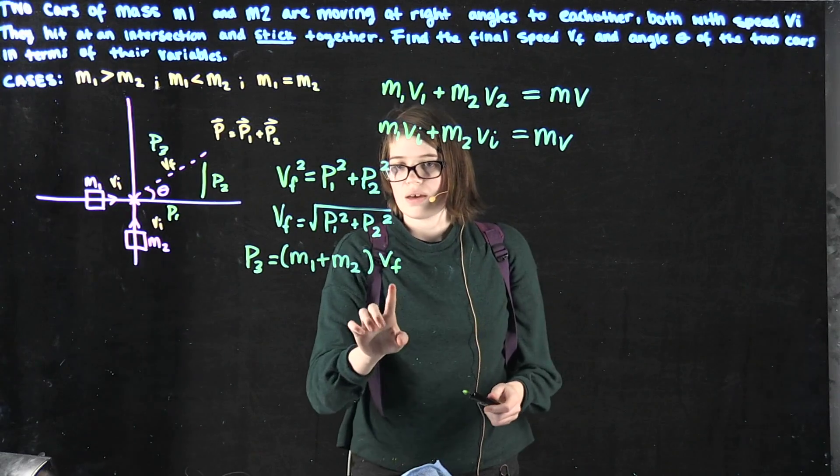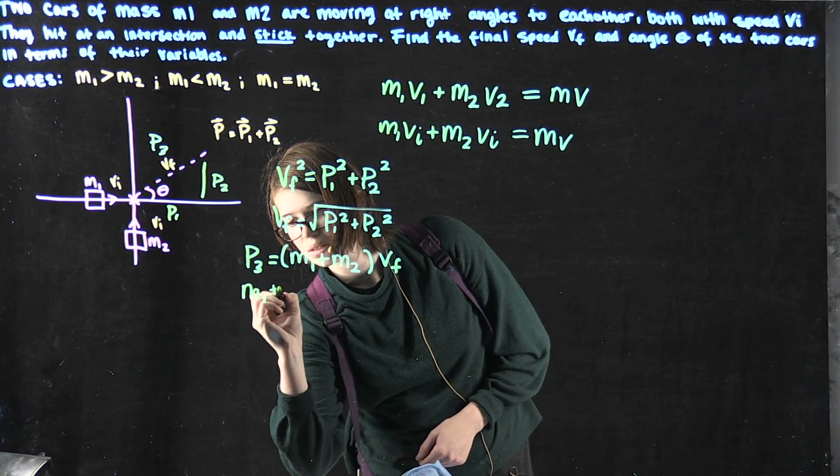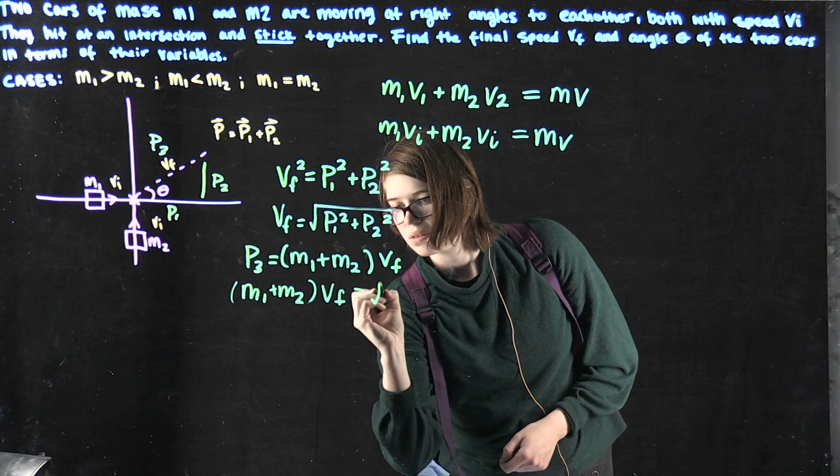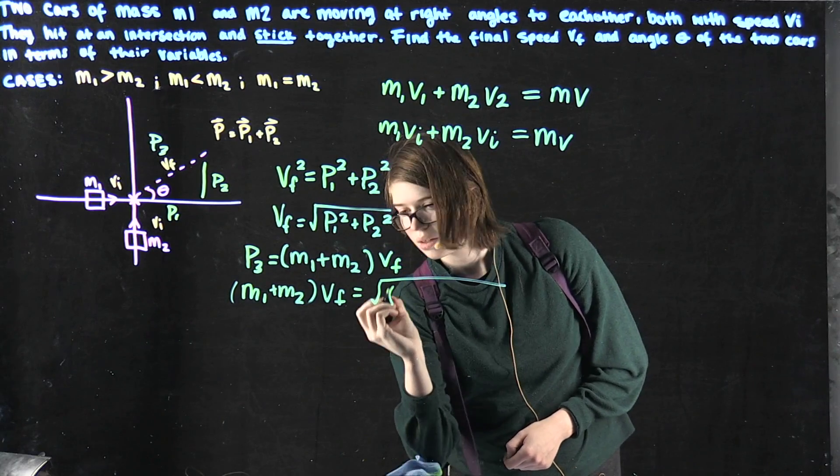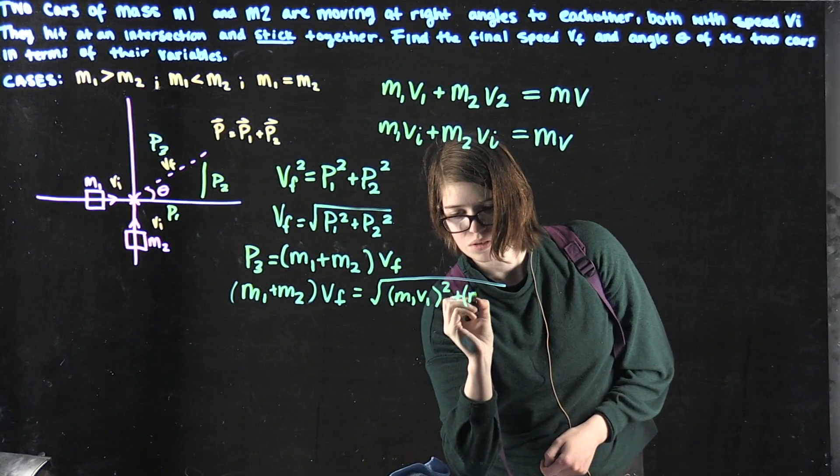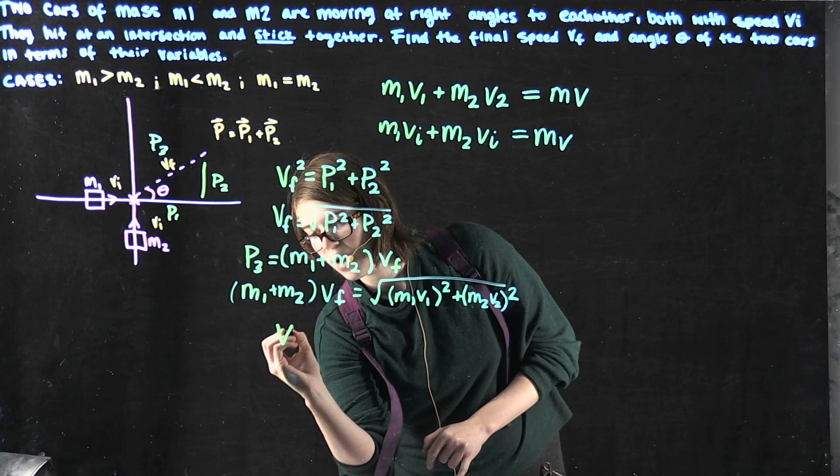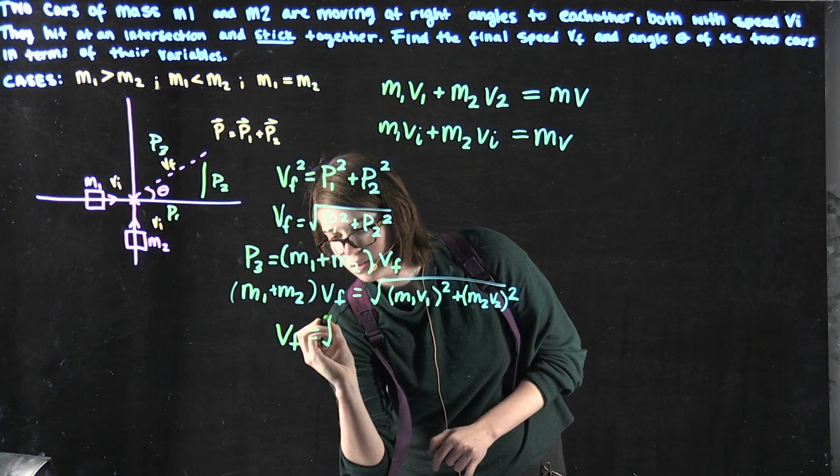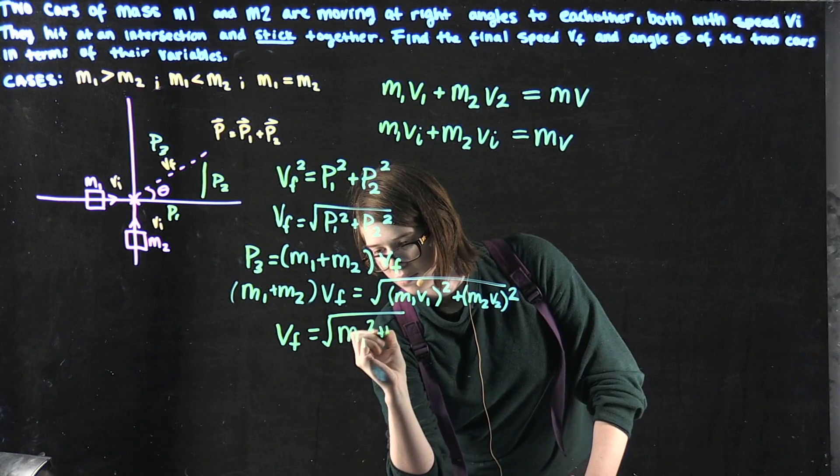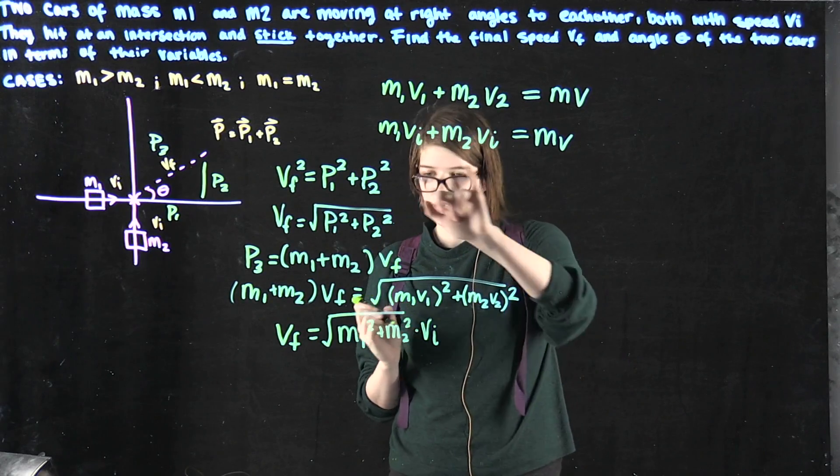We can move some things around and end up with m1 plus m2 times vf equals the square root of m1 v1 squared plus m2 v2 squared. We can divide some things out, so we end up with velocity final equal to square root of m times the velocity initial. We've pulled out the velocity initial.